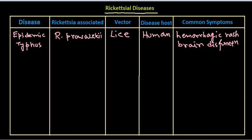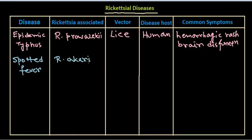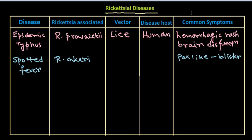The second type is spotted fever. Spotted fever is caused by Rickettsia akari. As the name suggests, symptoms include fox-like symptoms — blister formation on the skin of the face, hands, and different regions — along with fever, headache, myalgia, and nausea. The vector associated with this disease is mice, and the disease host is both humans and mice.